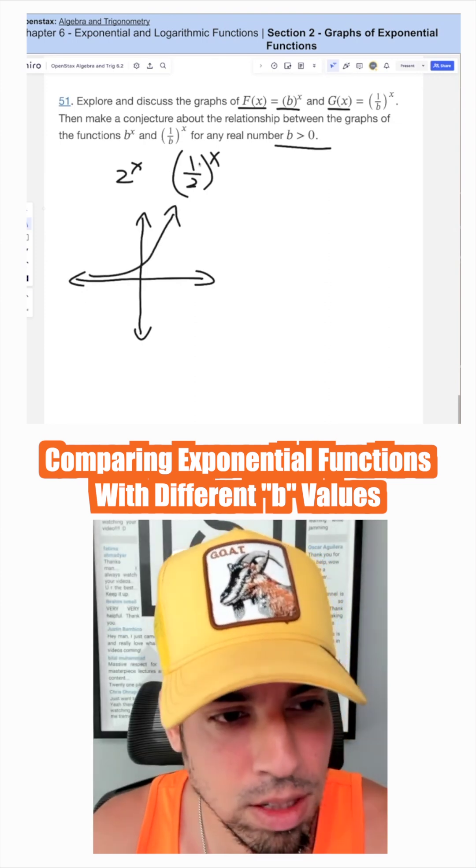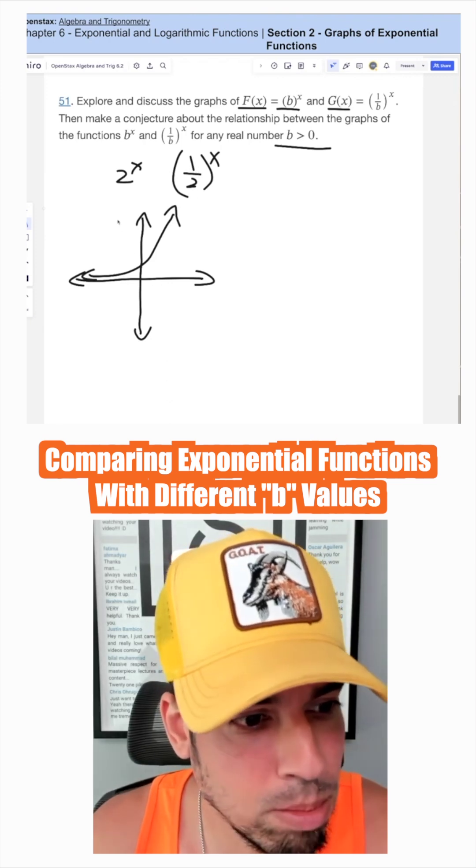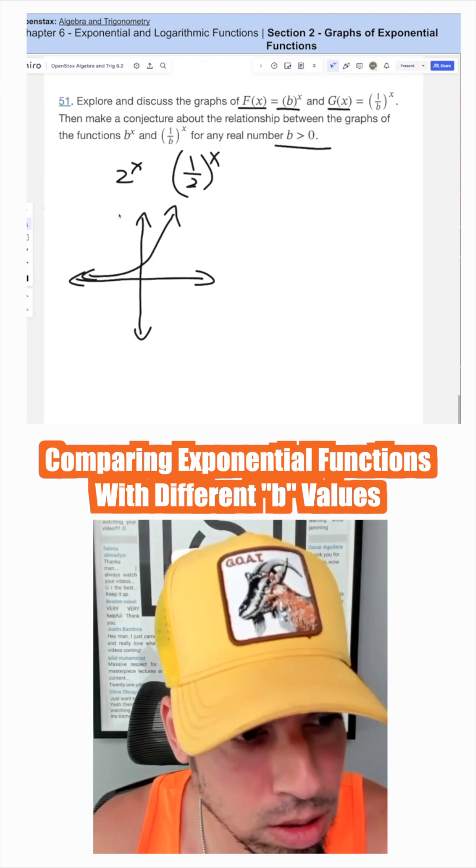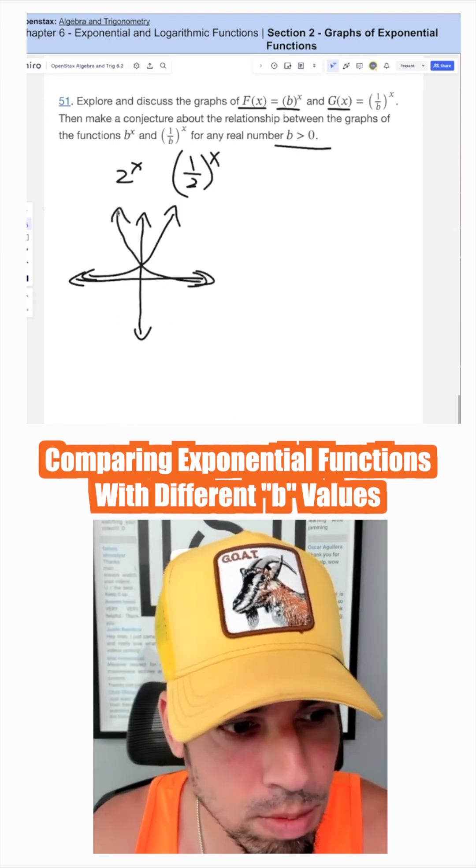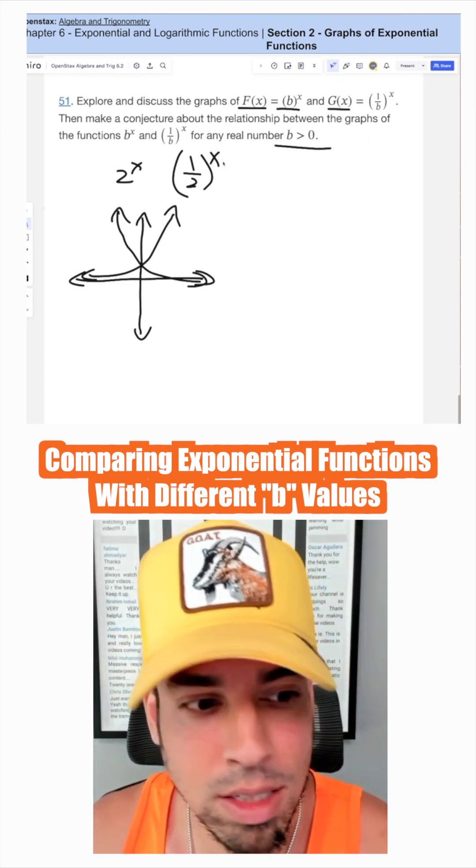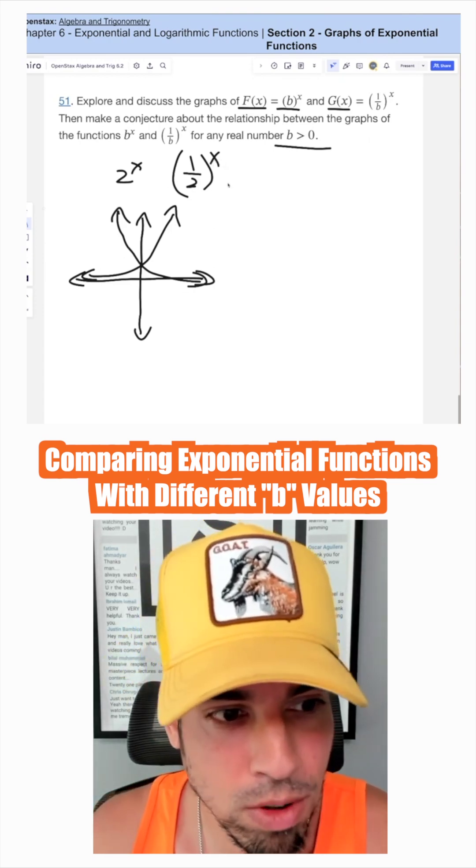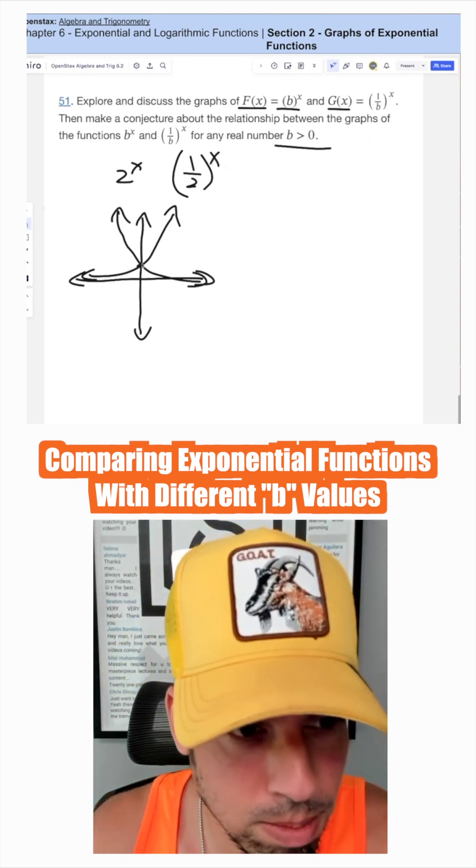And then 1 half to the x is actually going to be coming the other way, but it's going to look like a symmetrical flip across that y axis. And this you can see makes sense. When they're both zero for x, you get a y intercept of 1.